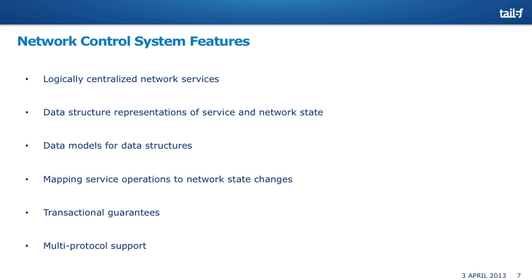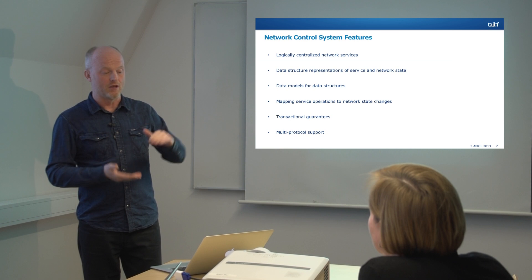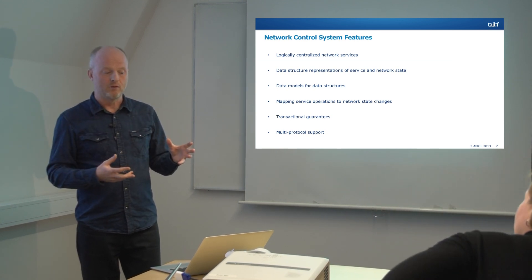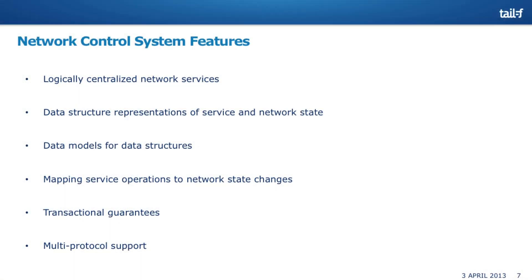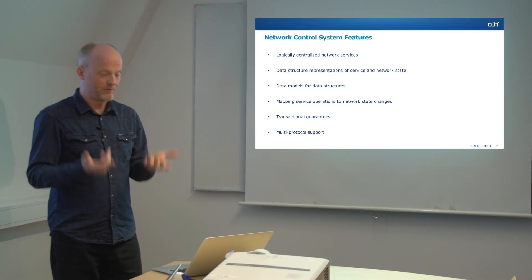Mapping services — mapping a service configuration to corresponding device configurations — is normally complex and can explode into thousands of lines of code, especially to cater for different kinds of changes. We reduce that to a very small definition thanks to the FastMap algorithm; you can do it in templates or in a declarative language. We give transactional guarantees including the devices — whether non-transactional or transactional, different kinds of APIs — using NCS, either everything happens or nothing. We also have multi-protocol support: netconf, CLIs, SNMP, and REST, both southbound and northbound.